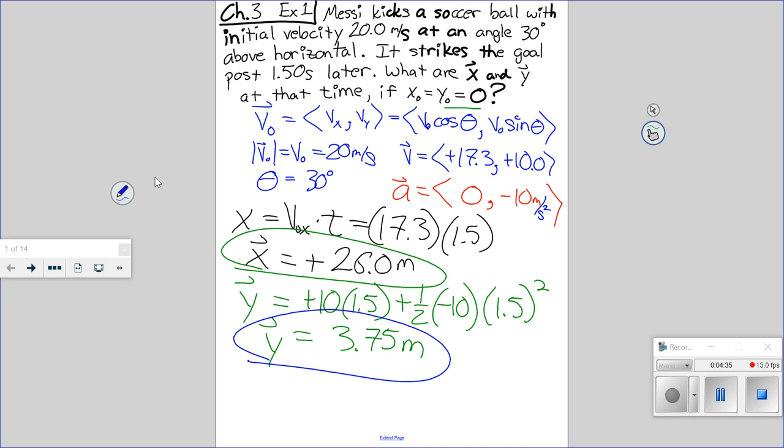So your homework is like three problems that are just about vectors from last week. And then the fourth problem is number 25. And it's just like this with different numbers. They might even have a nicer angle than 30. I always love 37. Any questions?